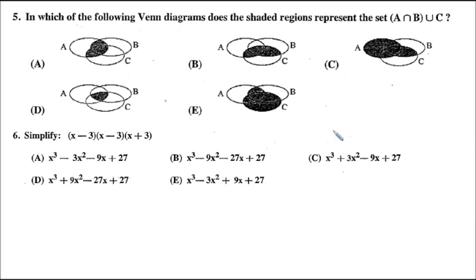Number 5 says, in which of the following Venn diagrams does the shaded region represent the set (A ∩ B) ∪ C? If we wanted to take an expression like this and express it as a Venn diagram, we could just compare it to whichever one of these looks like. So let's just draw our own Venn diagram here.